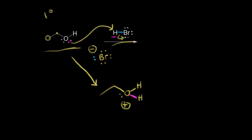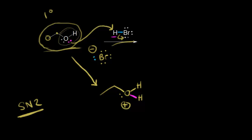Now we think about the SN2 mechanism. We need a nucleophile, an electrophile, and a leaving group. The reason we protonate the oxygen is to form a much better leaving group. If the nucleophile attacked ethanol directly, hydroxide would be the leaving group — that's not a good leaving group. Here we have water as our leaving group, which is much better, and that helps this process occur.